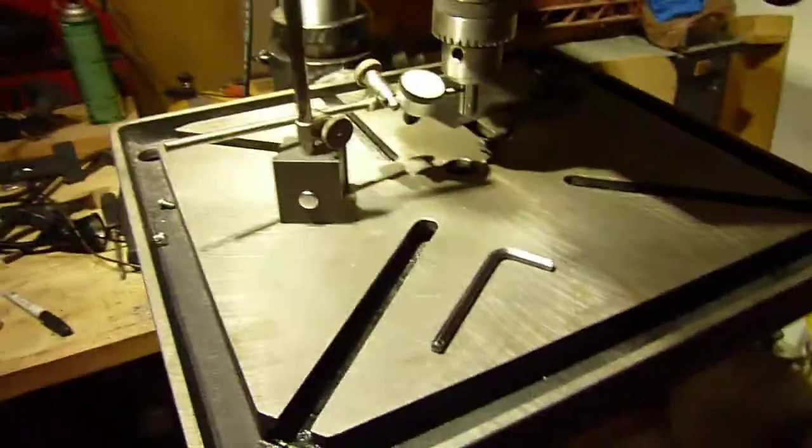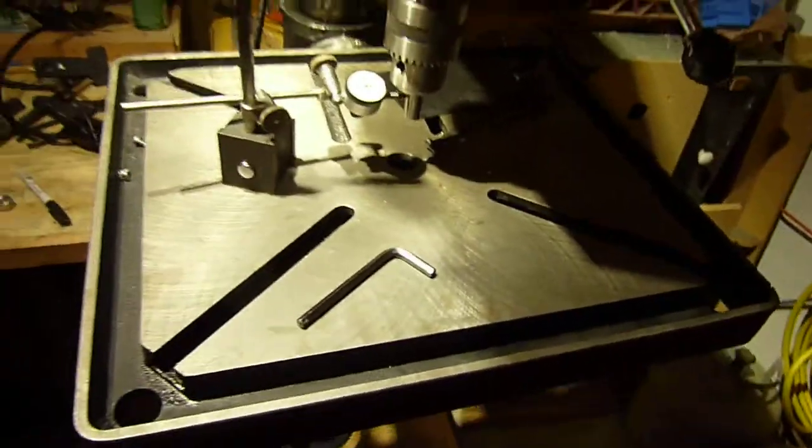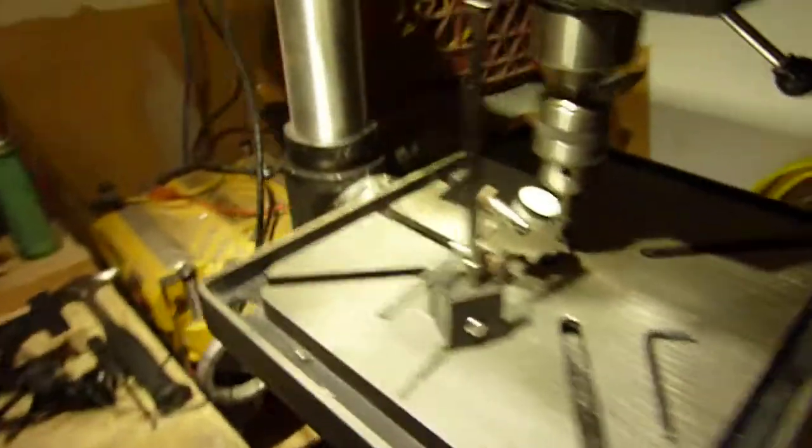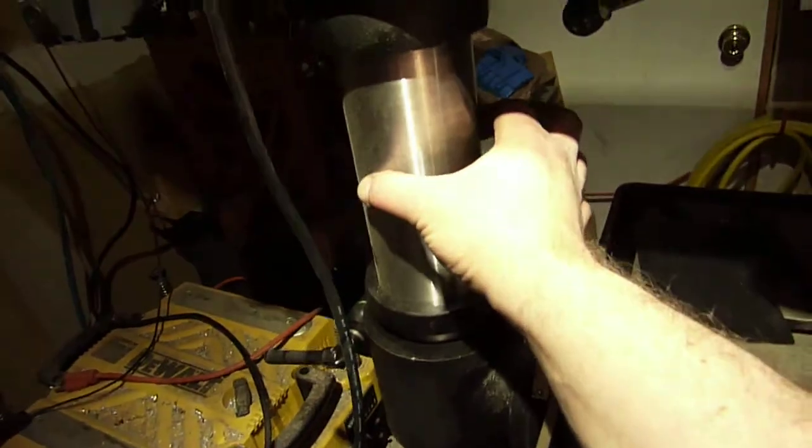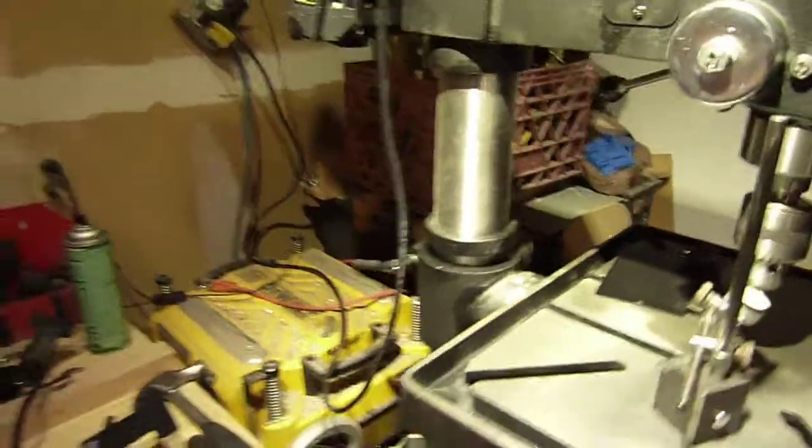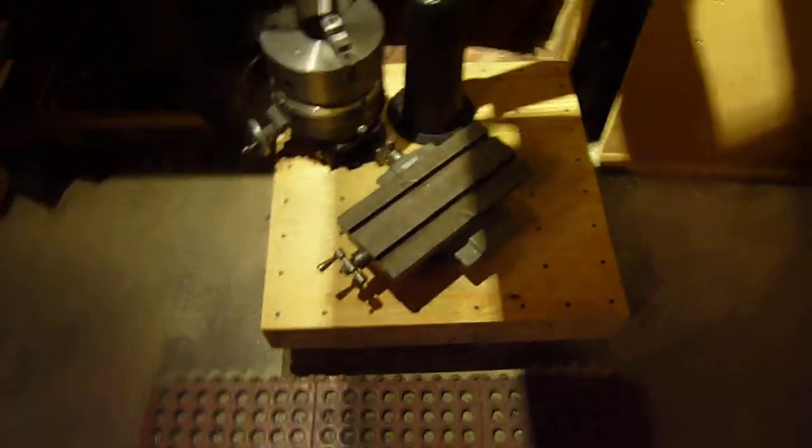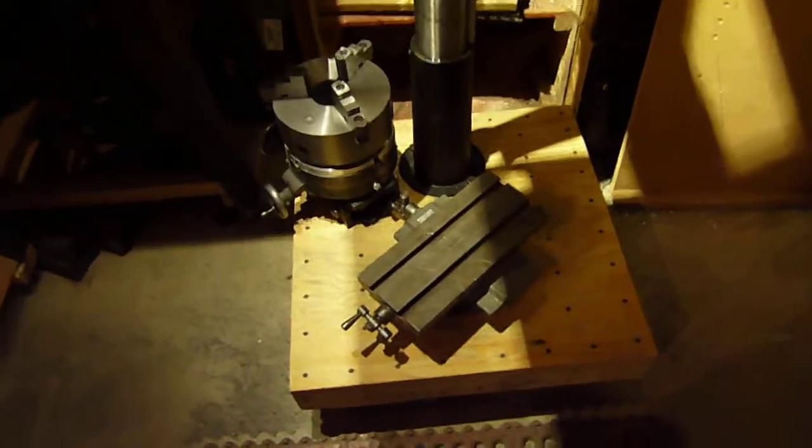Right now I have it on its lowest RPM setting. Nice big cast iron table, giant column. I guess that's five inches across. I haven't actually measured it. I made a big base for it, probably twice as big as the one on my old drill press, which was an old Craftsman 12 inch.